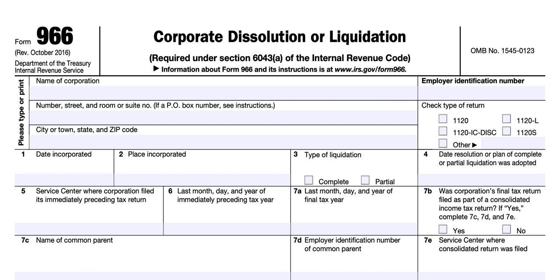On line 7c, enter the name of the common parent, if applicable. On line 7d, enter the employer identification number of the common parent. On line 7e, enter the service center where the consolidated return was filed. If it was filed electronically, enter e-file in this block.